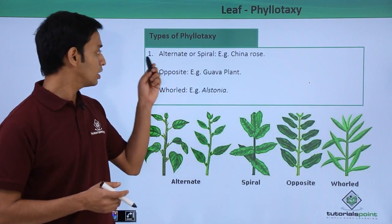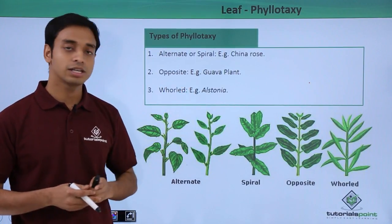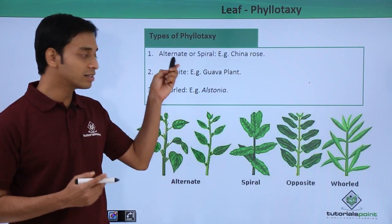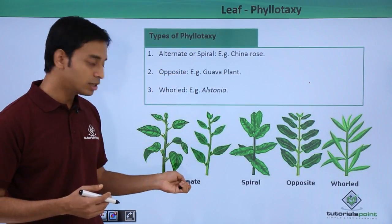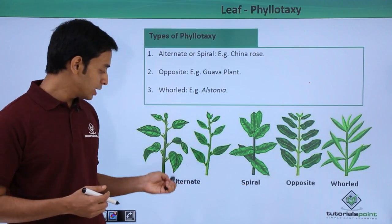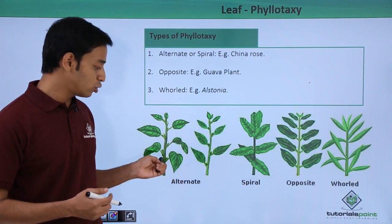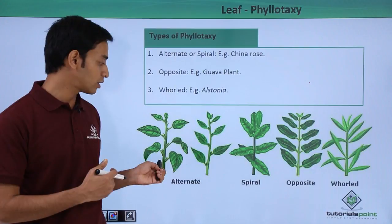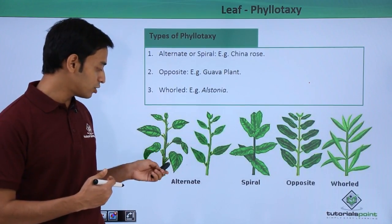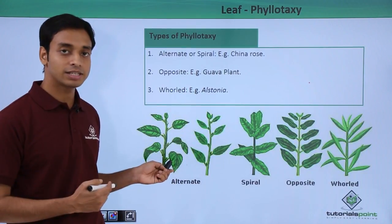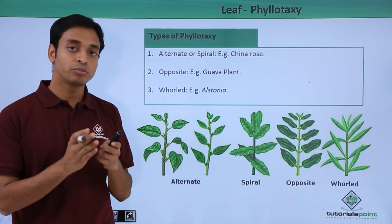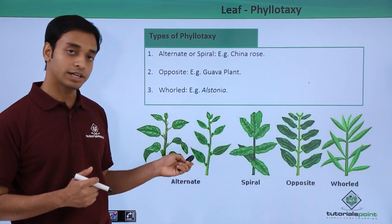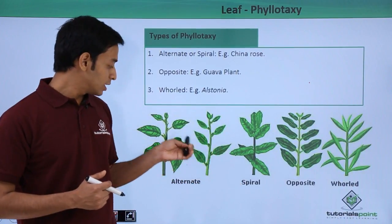The first type is known as alternate, or it is also known as spiral phyllotaxy. These are mostly seen in plants like China rose. In the alternate phyllotaxy, in each node there is a leaf arising, but on the other side of the node the leaf is not arising. They are present in an alternate fashion — from one node a leaf arises, from the next node a leaf arises but in a different direction.